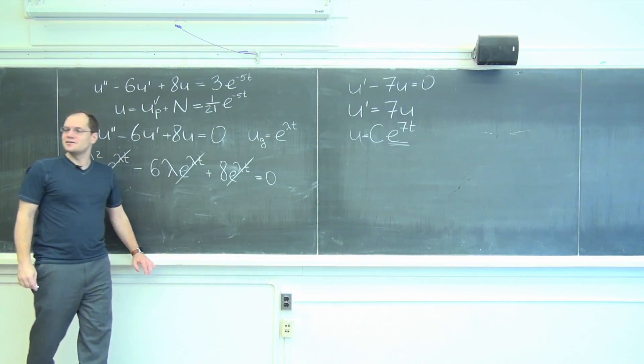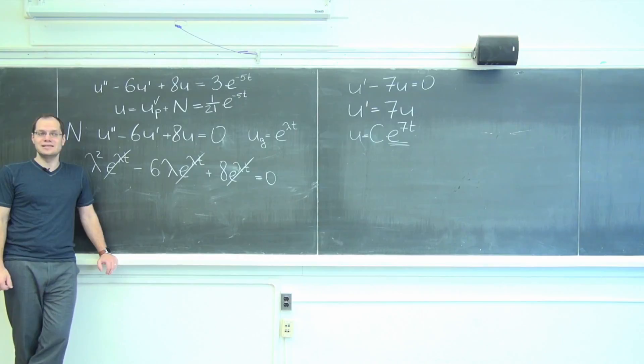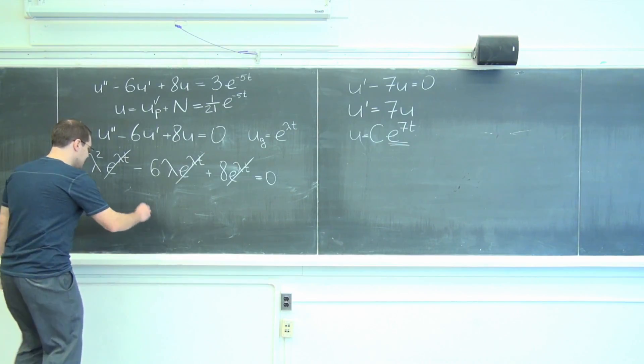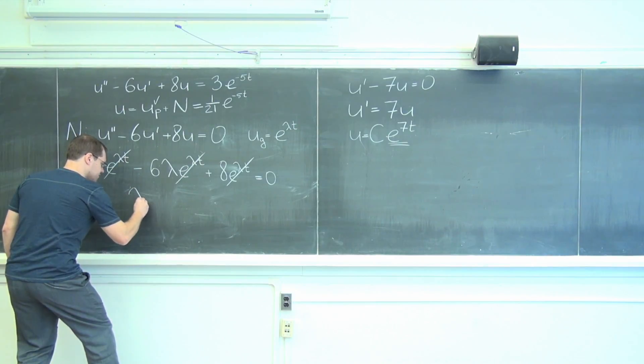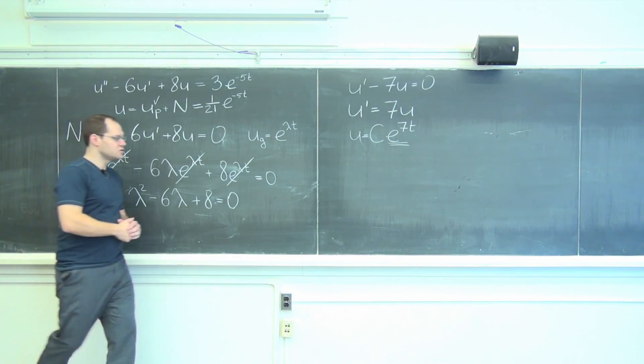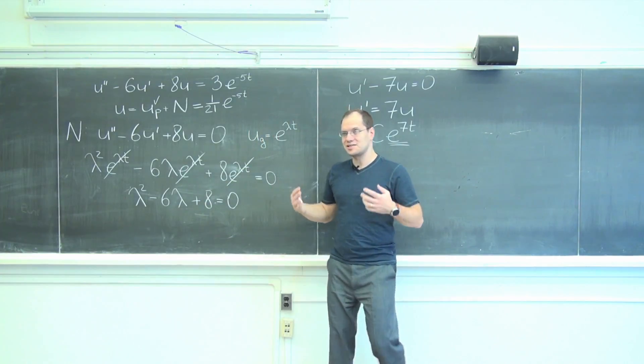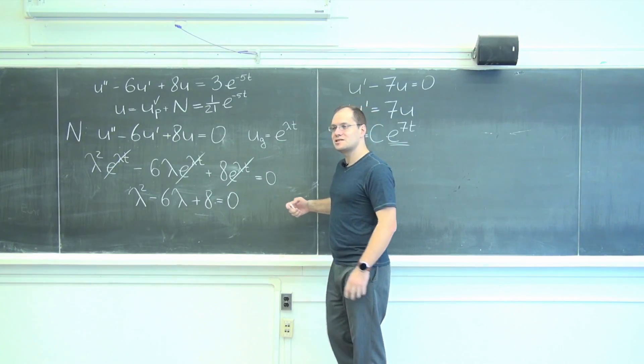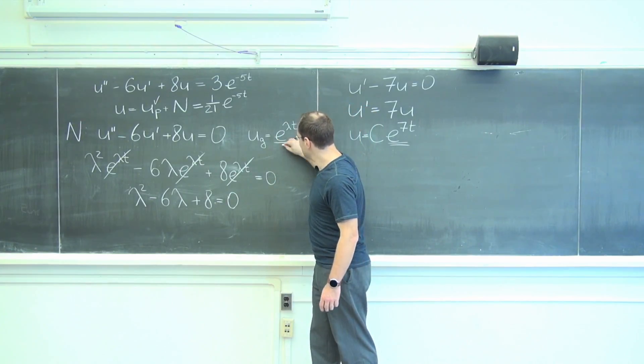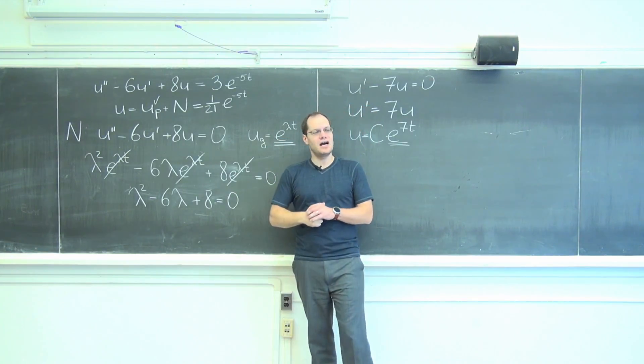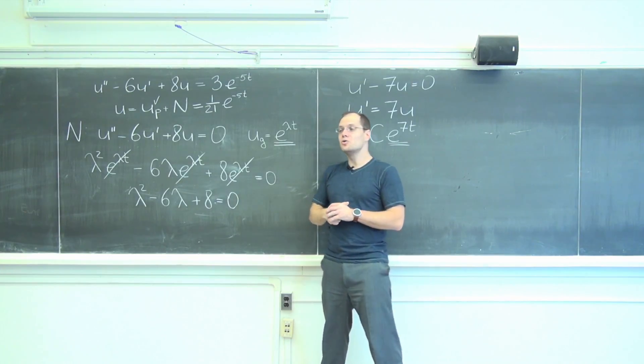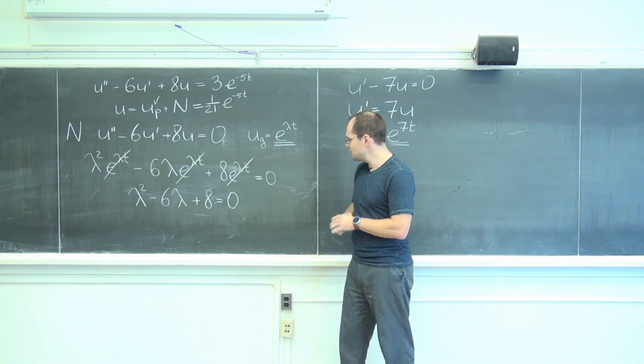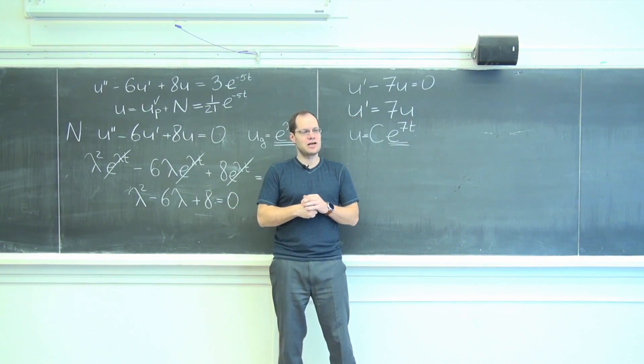We're left with an algebraic equation for lambda. There's no t left, it's just an algebraic equation for lambda. And it is lambda squared—so what this tells us, take a step back and try to tell yourself, what do we just discover? Well, we just discovered that perhaps this will work, but not for any lambda, only for very, very specific values of lambda, for those values of lambda that satisfy this quadratic equation. And those are?